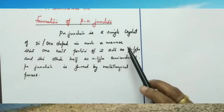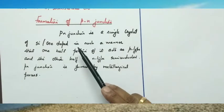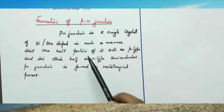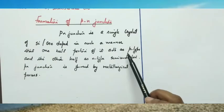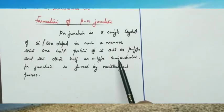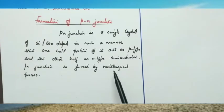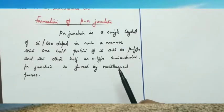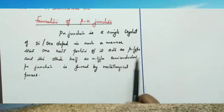A PN Junction is a single crystal of silicon or germanium doped in such a manner that one half portion acts as a P type semiconductor and the other half acts as an N type semiconductor. This PN Junction is formed by a metallurgical process — that is a very deep process.